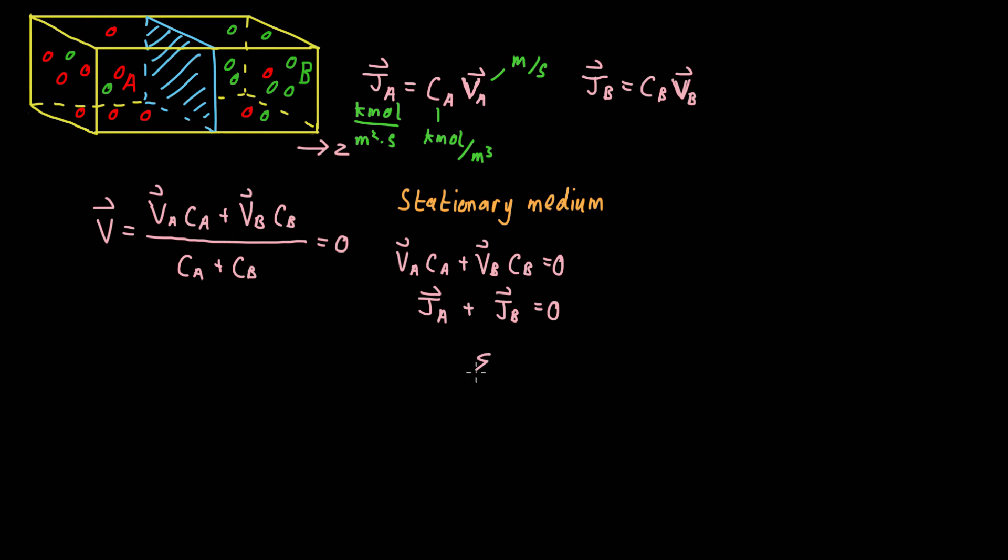If I speak more generically, if we sum over all the species, the flux over all the species i, J_i, then the total flux for a stationary medium is zero.